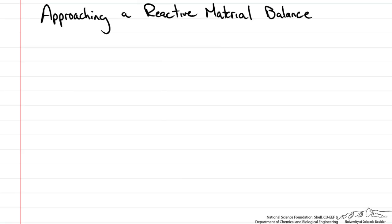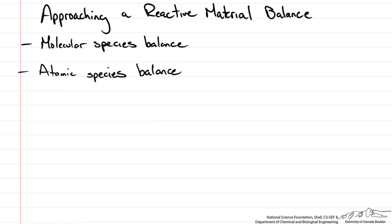In this screencast we are going to cover the three methods we use for approaching a reactive material balance. The three main methods that we will use when we have a reaction and we are doing a material balance are the molecular species balance, atomic species balance, and lastly the extent of reaction method. I will go through each method using the same reaction setup to show you how to use them and provide some insight on which method is appropriate for a given reactor system.